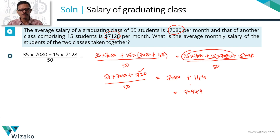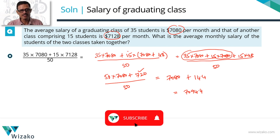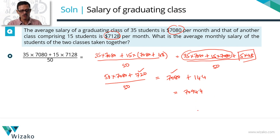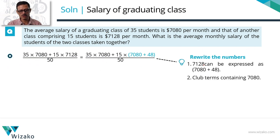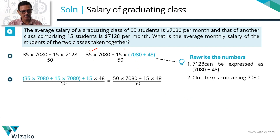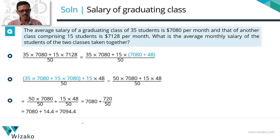So what did we do? We expressed the larger number 7128 as the sum of the smaller average plus 48. We could then club the terms and get the answer quickly. All that was left was calculating a friendlier, smaller number. In summary, we wrote 7128 as 7080 plus 48, clubbed the two 7080 terms to get 50 × 7080, and added 15 × 48 = 720 to arrive at the final answer of 7094.4.